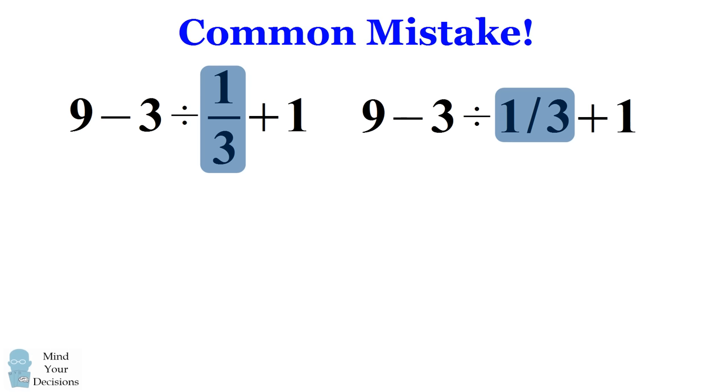Although you want the one-third to be grouped together, this expression is going to be evaluated by a calculator by converting this division symbol into a division slash. This will not be equal to your original expression. The calculator is going to look at the 3 divided by 1 divided by 3 as one term and it's going to evaluate it from left to right.